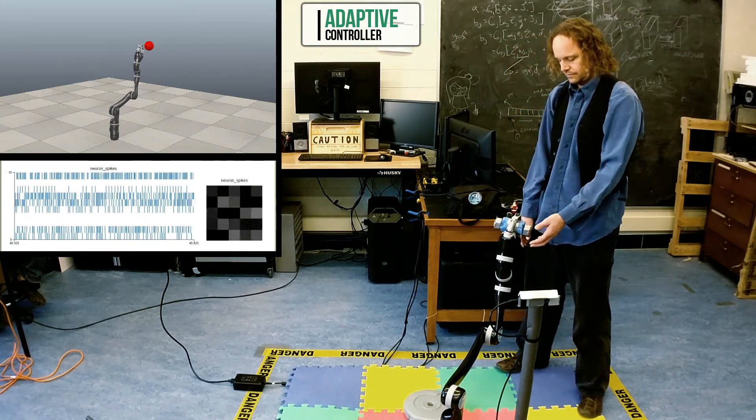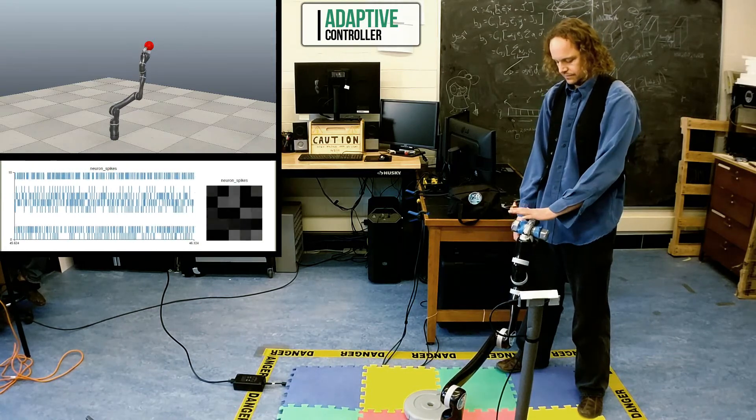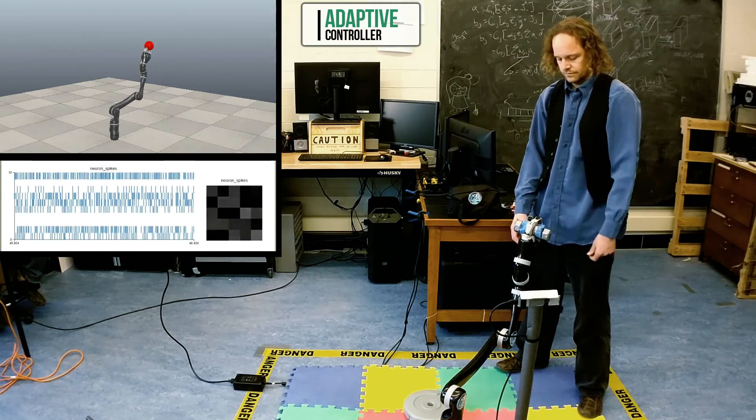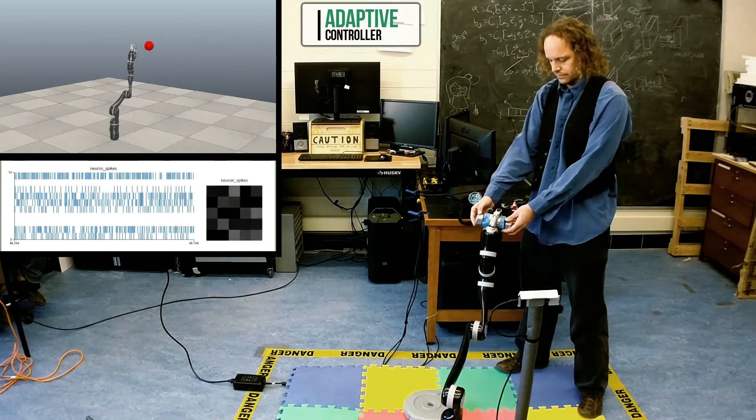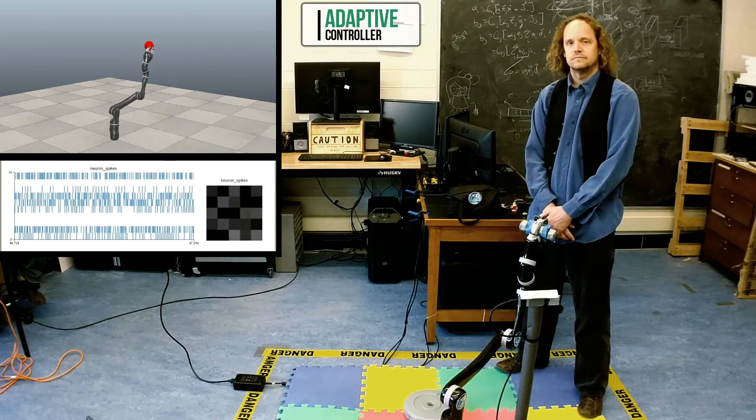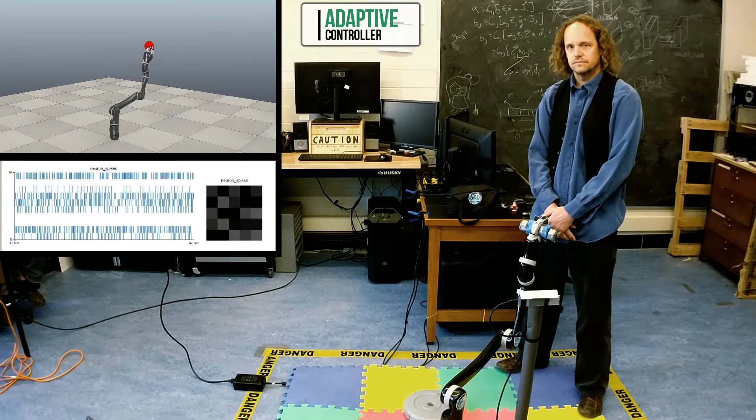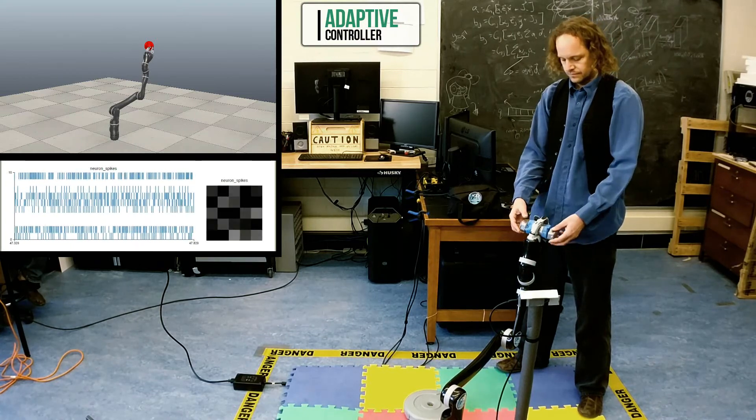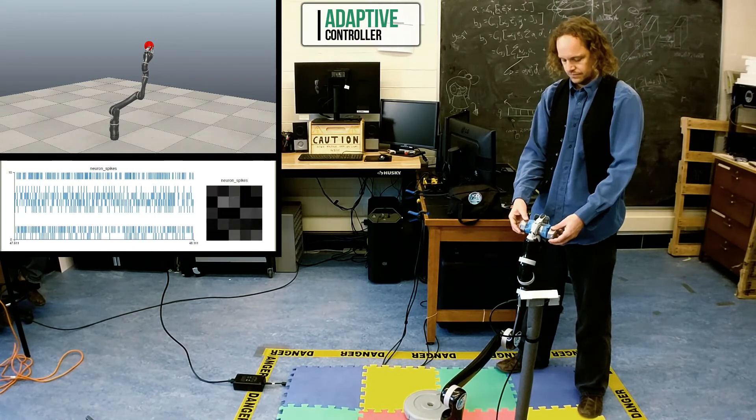Even with the adaptation, the arm remains compliant. It has simply learned to increase the forces applied to the motors just enough to compensate for the effects of gravity and stiction. This concludes Part 1 of our adaptive control demo. Please see Parts 2 and 3 for more advanced behaviors.